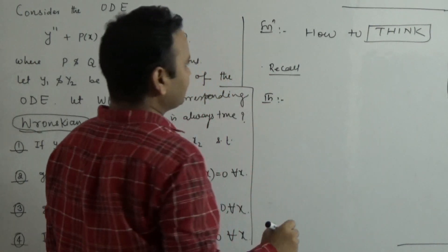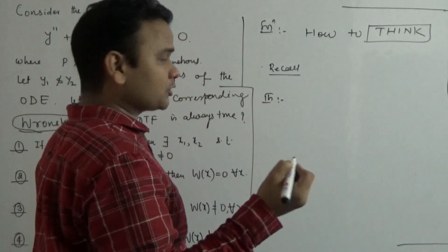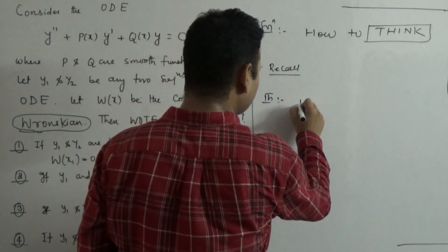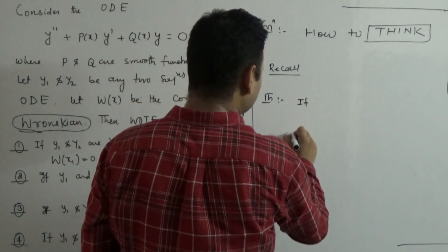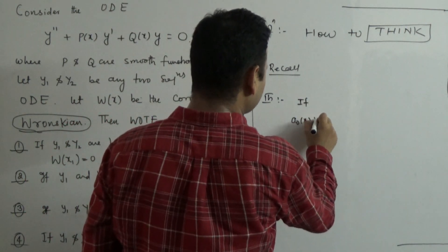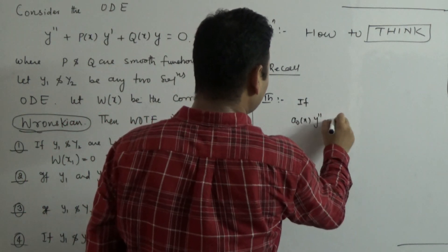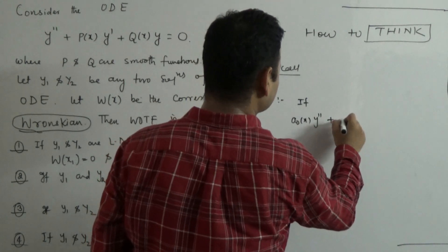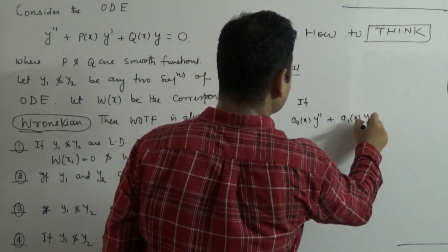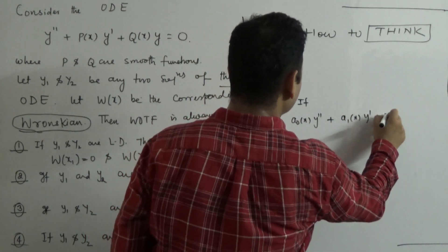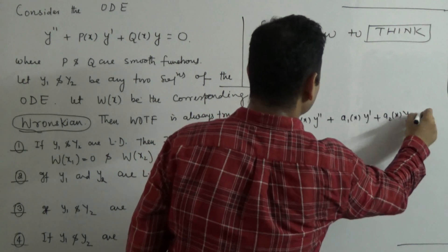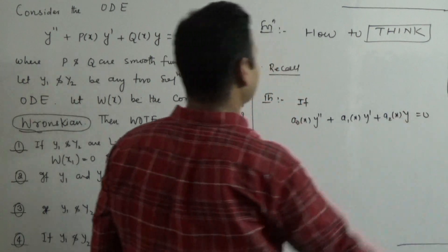This is the theorem. The Wronskian of two solutions: if your differential equation is A0(x)y'' + A1(x)y' + A2(x)y = 0...